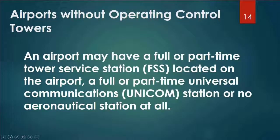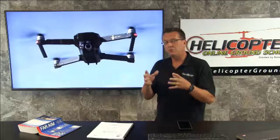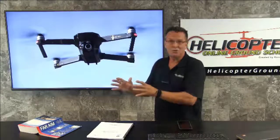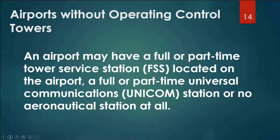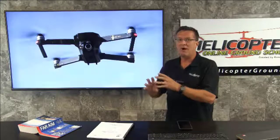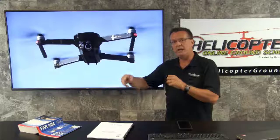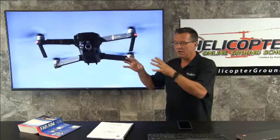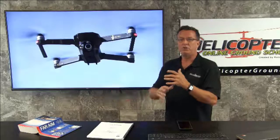Next we're going to talk about airports without operating control towers. Occasionally I'll talk about the airport where we operate here, which is the Plymouth Municipal Airport. It is an uncontrolled airport in the Class G environment. An airport may have a full or part-time tower, a flight service station — FSS — a Unicom station, or no aeronautical station at all. Here at Plymouth, we're Class G, no control tower, no FSS — all we have is a Unicom on 122.8, which is very common. Many airports are on 122.8 or 122.9. At this Class G uncontrolled airport, we use self-announced procedures.